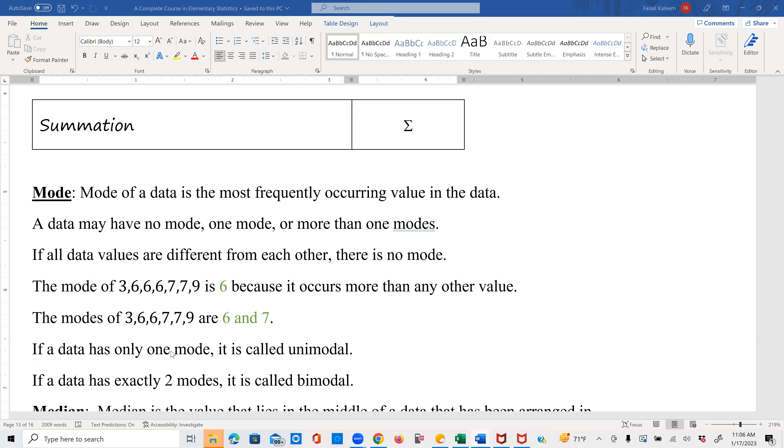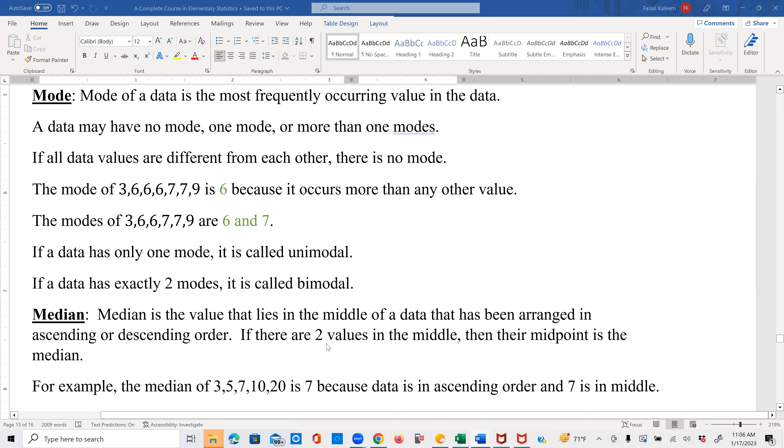If a data has only one mode, it is called unimodal. If it has exactly two modes, it's called bimodal.